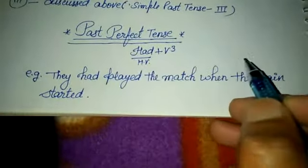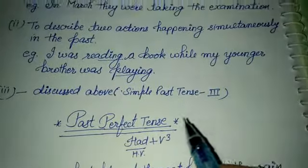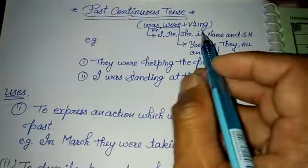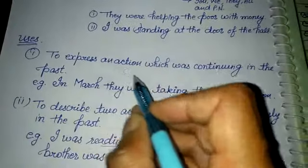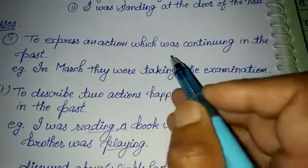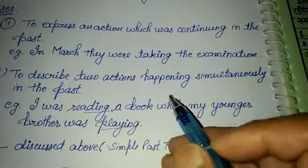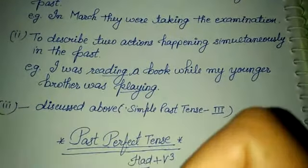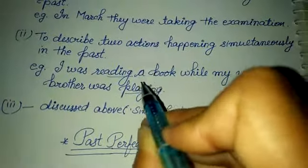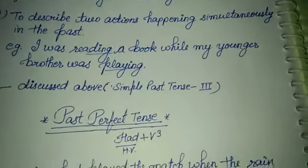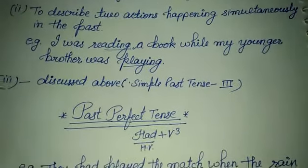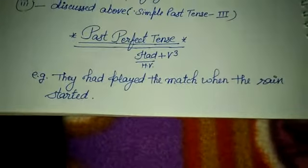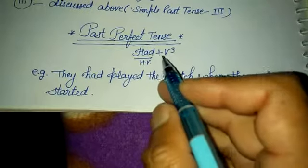Quick revision of past continuous tense: its ID is was/were + V1 + ing. Its uses are: (1) an action that was continuing in the past, (2) two actions happening simultaneously in the past, and (3) two actions in the past where one is finished and the other is continuing in the same time period. Other rules will be covered in conditional sentences. Next comes Past Perfect Tense.